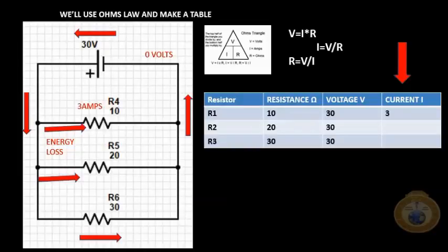In order to find current, we have to divide. Current equals V over R. So V is voltage, resistance is 10, so 30 divided by 10 is 3. The next one, 30 divided by 20 is 1.5, and 30 divided by 30 would be 1.